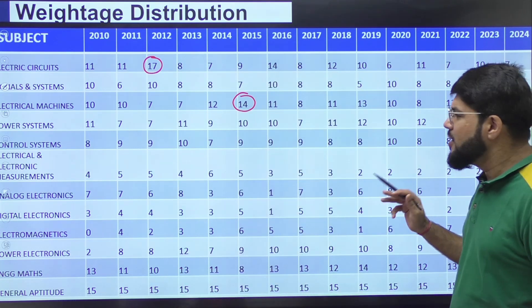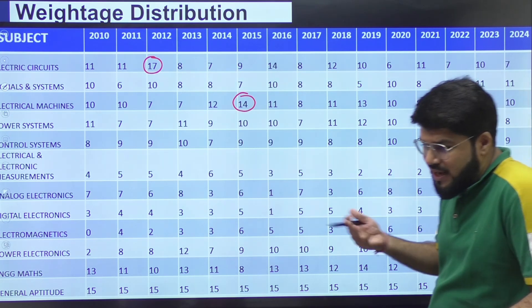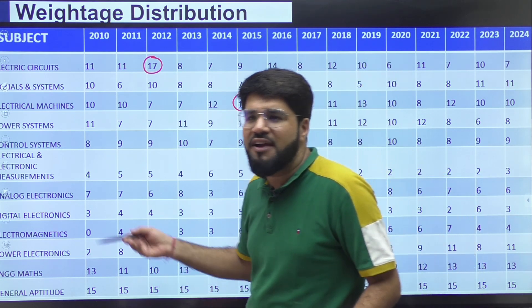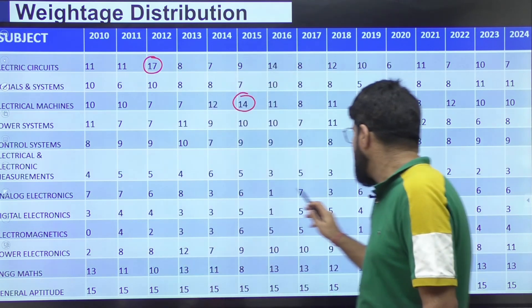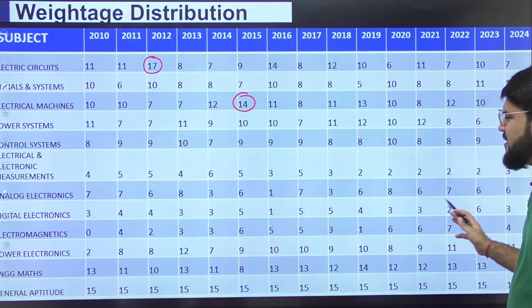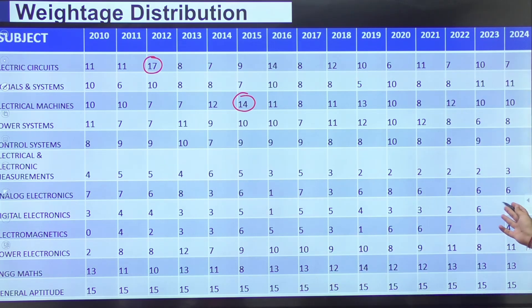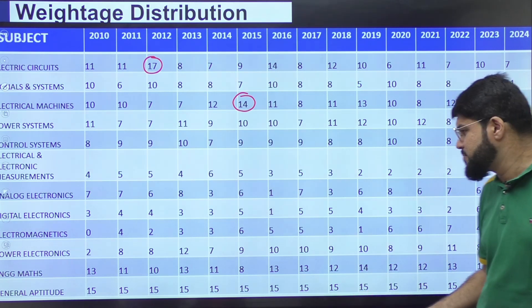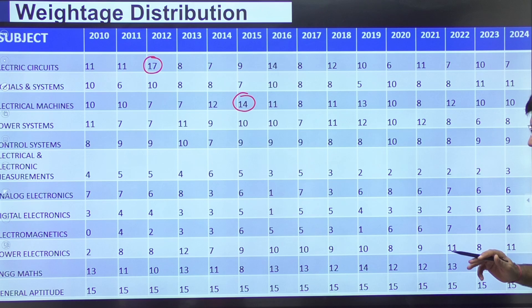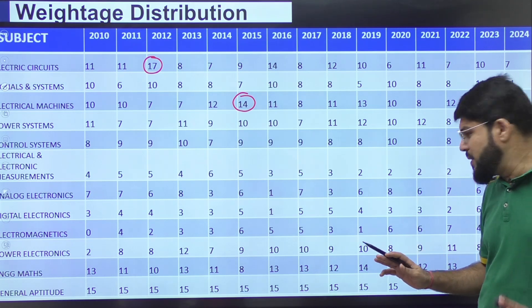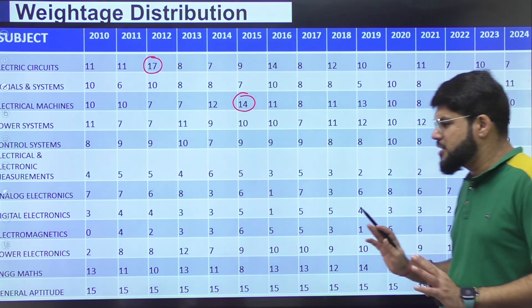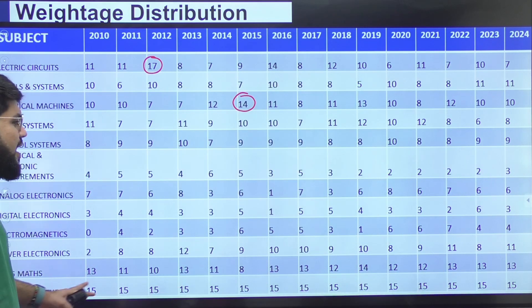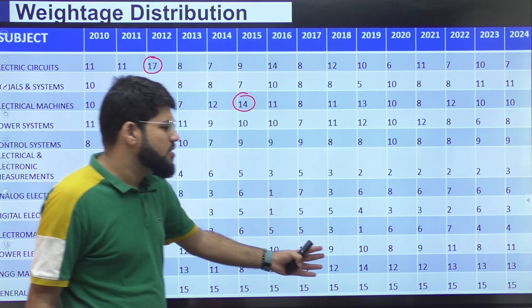Analog electronics: around 5 to 6 marks usually. For electrical, the syllabus treats analog and digital electronics as one subject — I have bifurcated it into two parts. Digital: around 3 to 4 marks, sometimes up to 6. Electromagnetics: these days around 5 to 6 marks, sometimes up to 7. Power electronics, being a core subject: regularly expected around 10 to 11 marks, or at least 9.